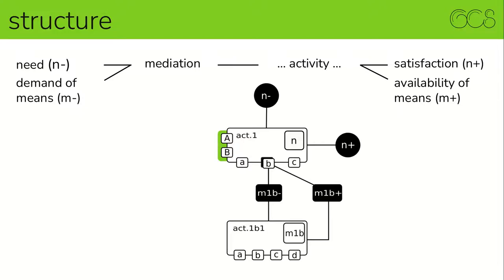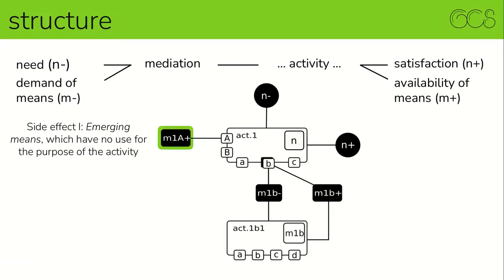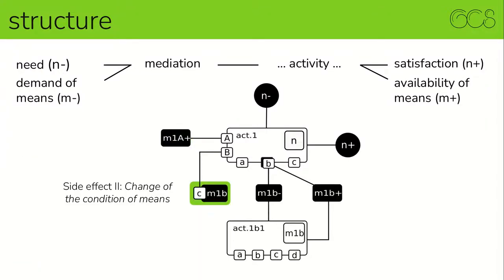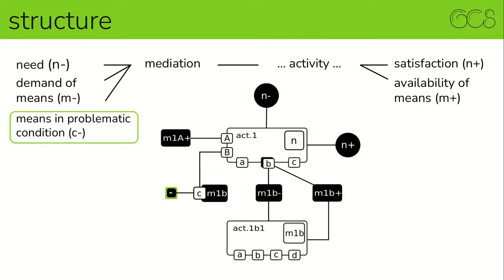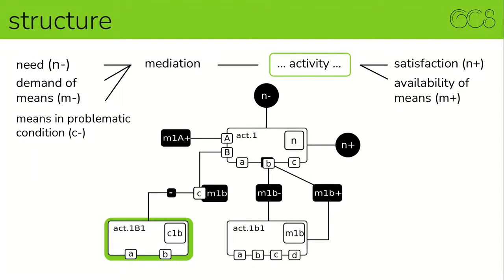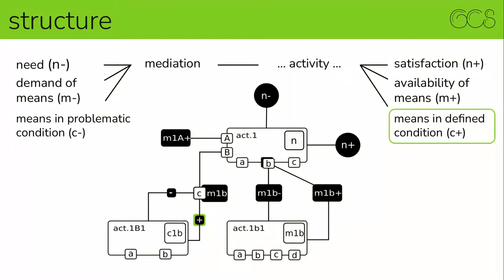There is a third way in which problems can arise: the side effects of activities. The first form of side effects are new means that arise through the execution of the activity but are not directly necessary for the satisfaction of needs — that could be garbage, for example. The second form of side effects can be a change in the condition of a means — for example, a room that gets dirty, a machine that breaks, or a tool that is worn out. We are talking about a problematic condition of a means that also has to be mediated again, with an activity to return the means to its defined condition.